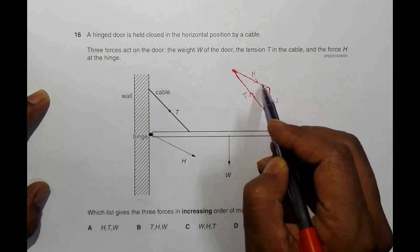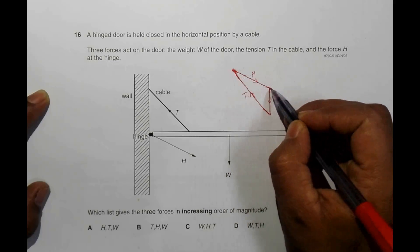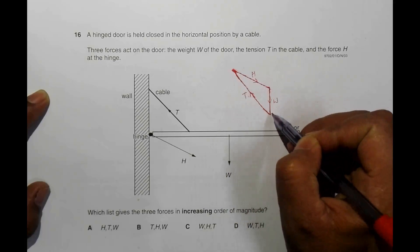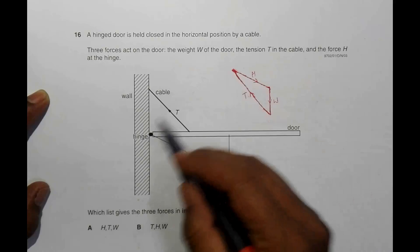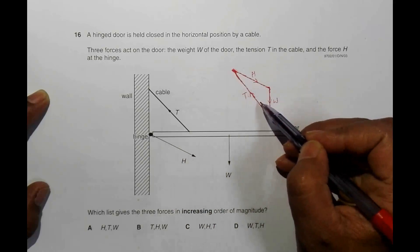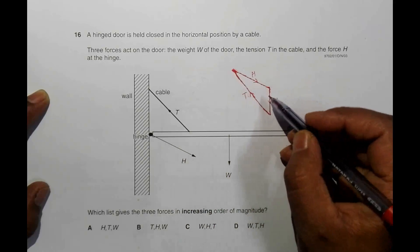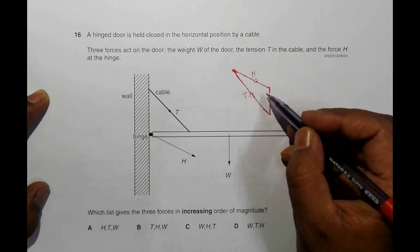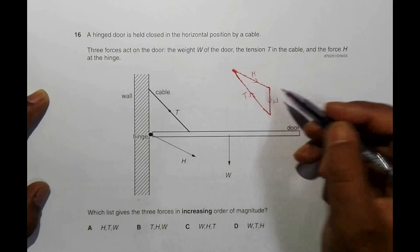So first it is W. From the tip of W I drew T, and from the tip of T I drew H. And at the end point of this H exactly came to be the starting point of W.